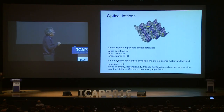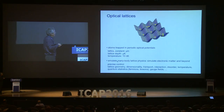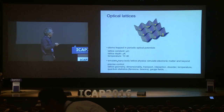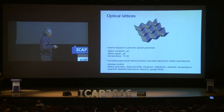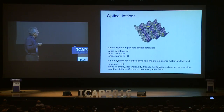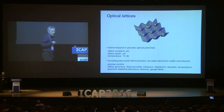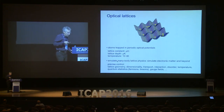We have an optical potential with a lattice constant on the order of a micrometer, lattice depth in the microkelvin range, and temperatures between 10 and 100 nanokelvin. We try to emulate many-body lattice physics, simulate electronic matter and beyond. There is outstanding control over lattice geometry, dimensionality, transport, interactions, disorder, temperature, quantum statistics, and engineering gauge fields is very easily possible.